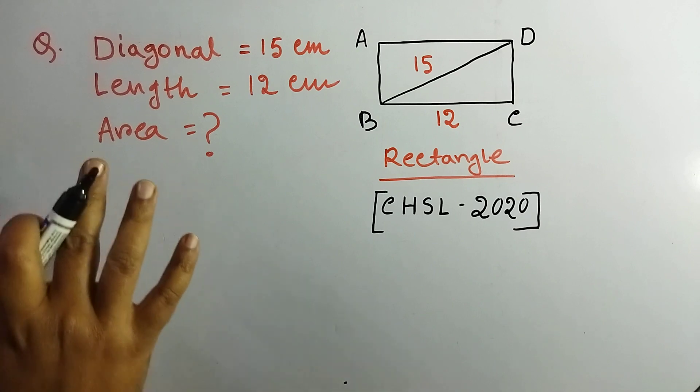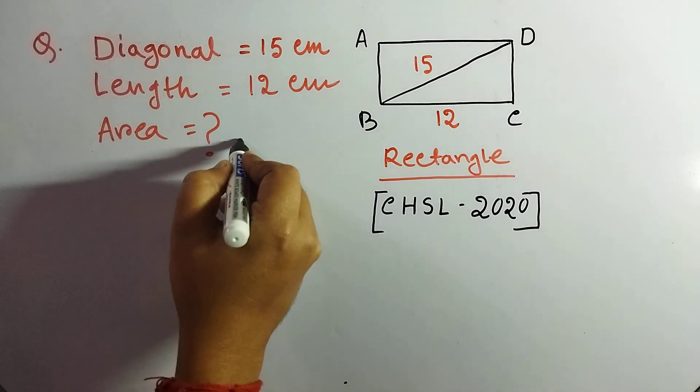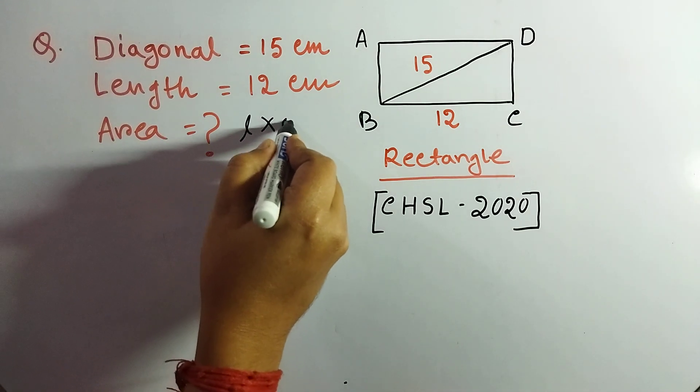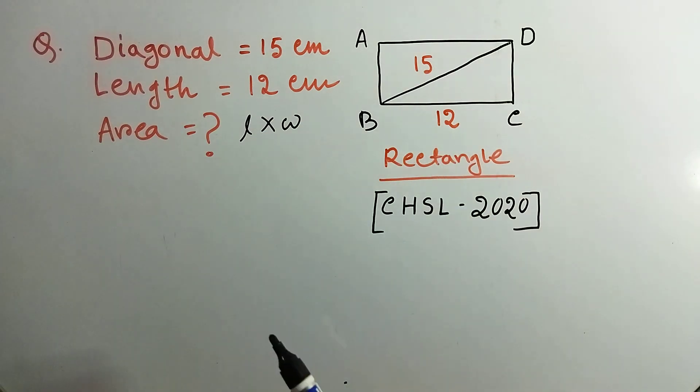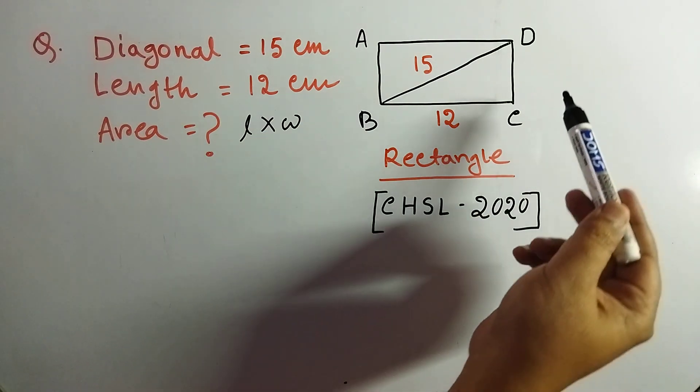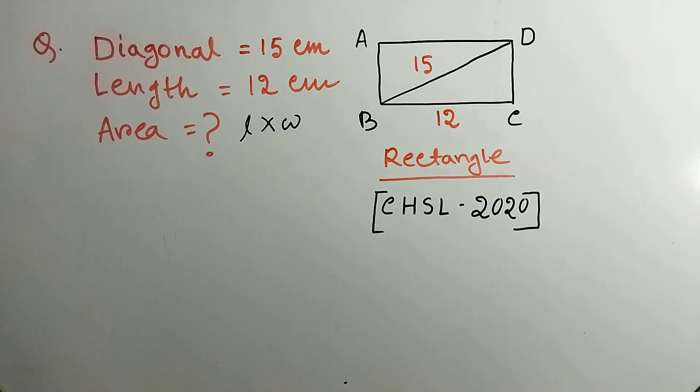We know the formula for area is length multiplied by width. So we have length as 12 and width, that is DC, is not given. So we have to find out the width.